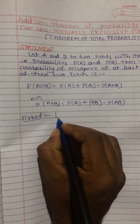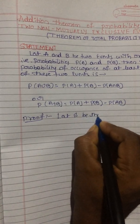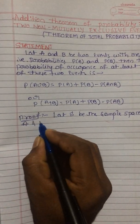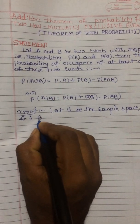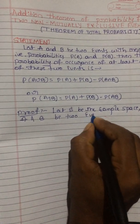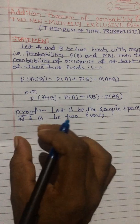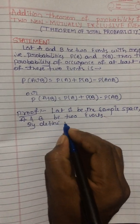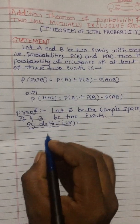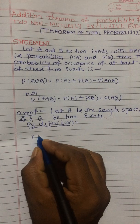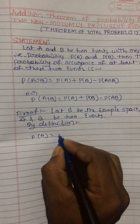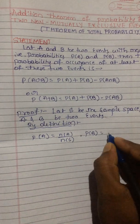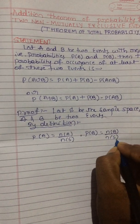Now for the proof: let S be the sample space, and let A and B be two events. By the definition of probability, if we consider event A, we write P(A) = N(A) / N(S). Similarly, the probability of B is P(B) = N(B) / N(S).